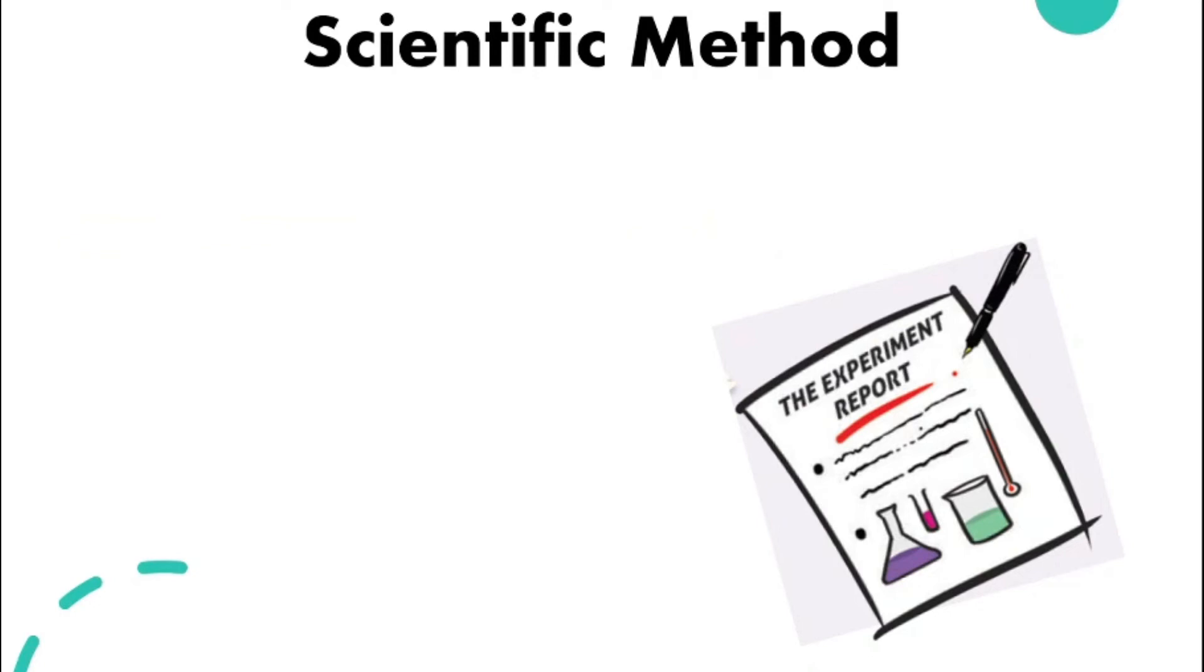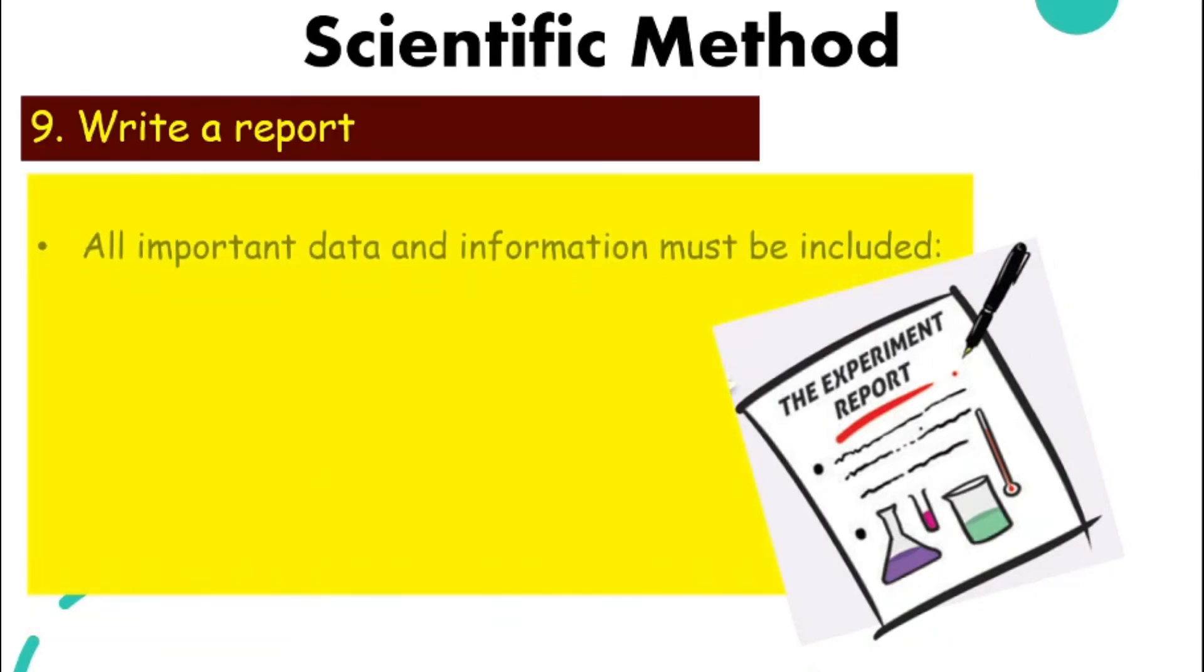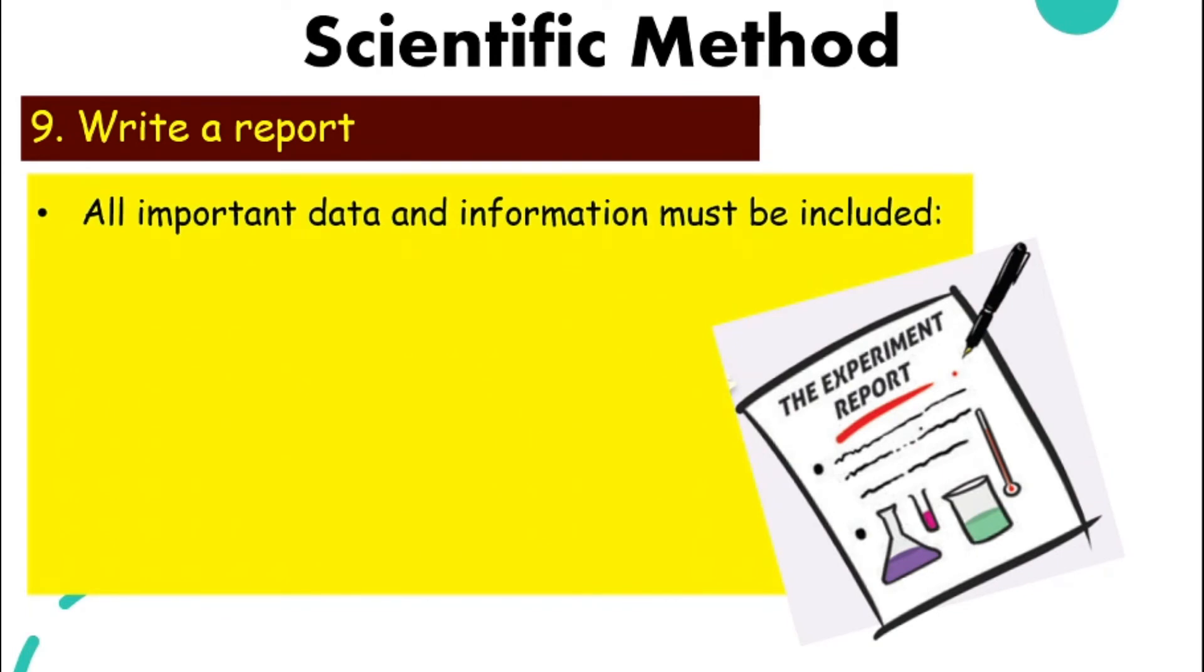After we make a conclusion, we will need to write an experimental report. Normally, after your experiment, your teacher will require you to complete the experiment report. We have a lot of very important data and information that we must include in our experiment report. First of all, we have our problem statement. Remember, the girl has a problem; she identified the problem, so we need to write that down. Then the hypothesis, which we make a guess on what will happen. Aim of the experiment. Variables - we have learned three different types of variables, we need to write that down as well.